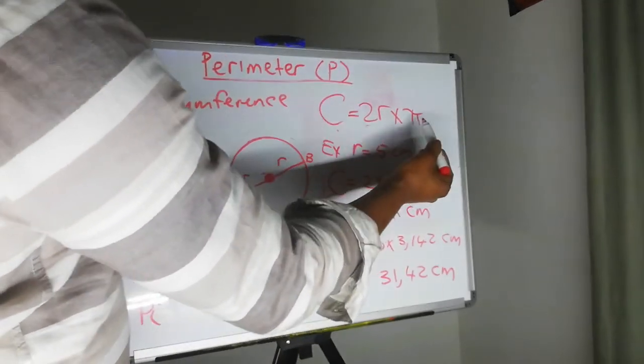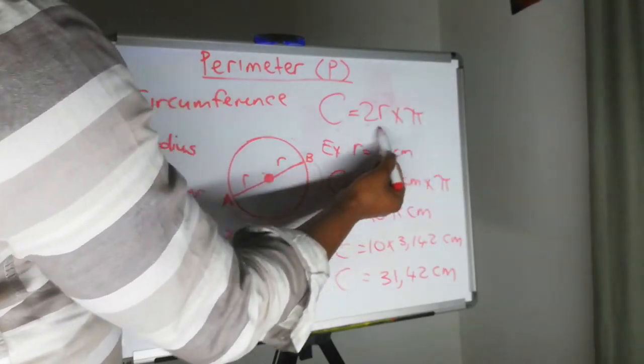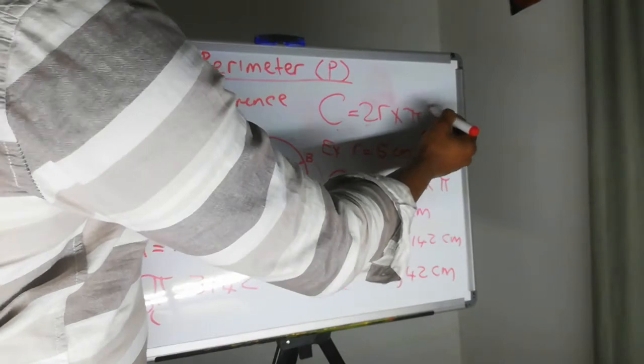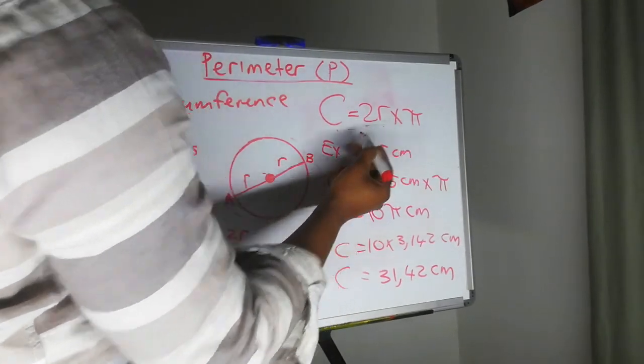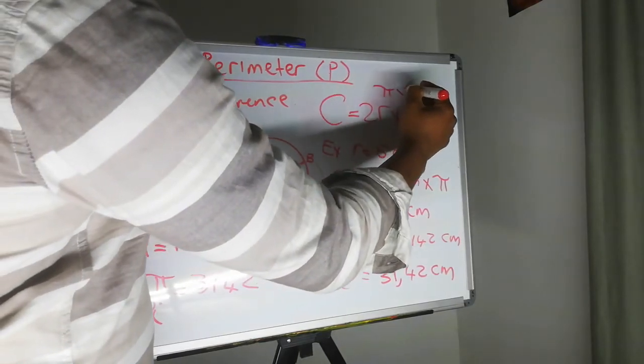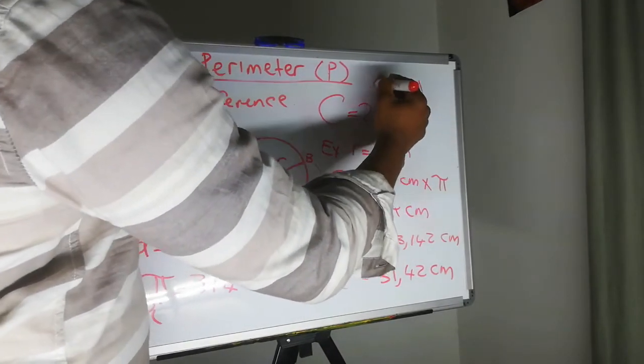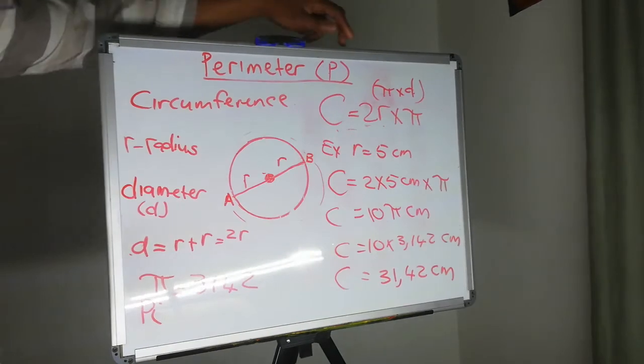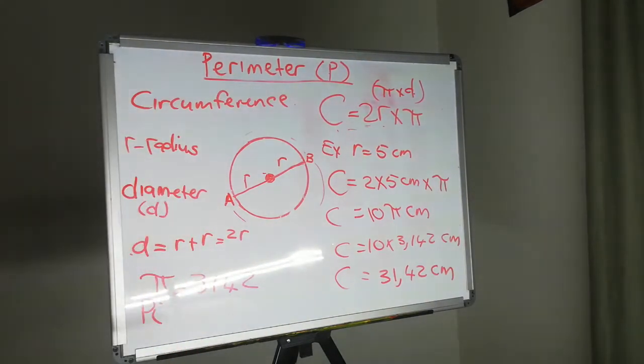So a different variation of this formula is to say two radii is equal to one diameter. So it is pi times diameter.